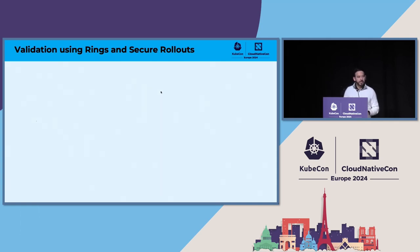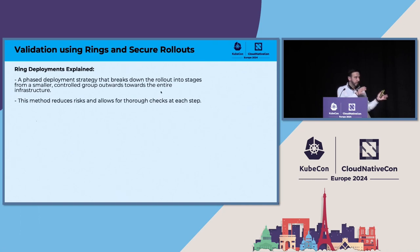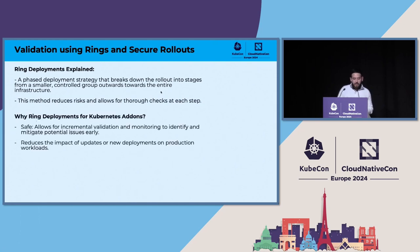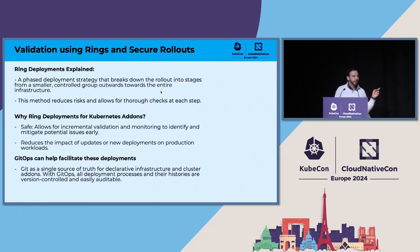My next strategy is validating using rings and secure rollouts. With a ring deployment, you can think about it as phases — a phased deployment strategy that breaks down the rollout into different stages, from a small control group outwards towards the entire infrastructure. This method reduces risks and allows for thorough checks at each step. Why use ring deployments for Kubernetes add-ons? It's safe: it allows for incremental validation and monitoring to identify and mitigate potential issues early.